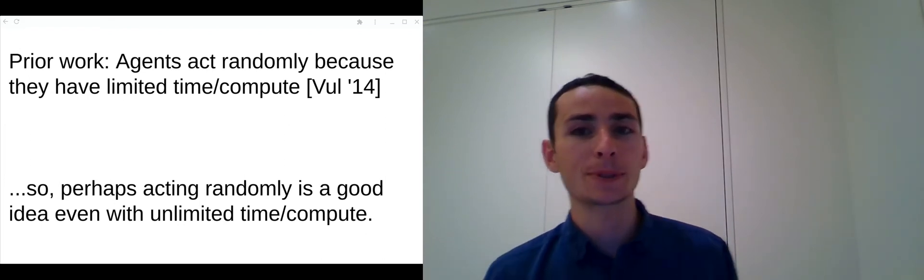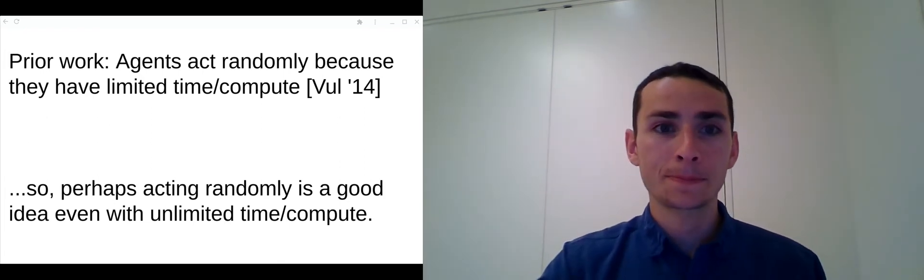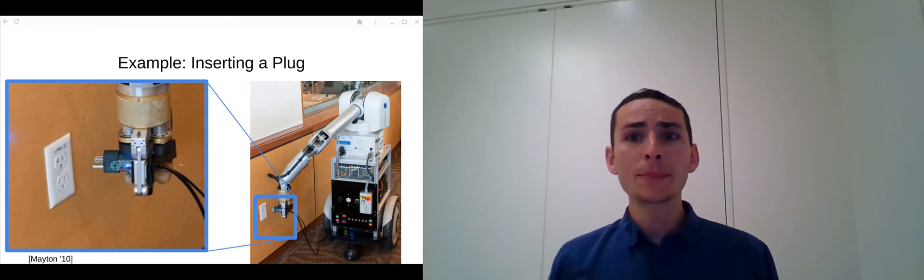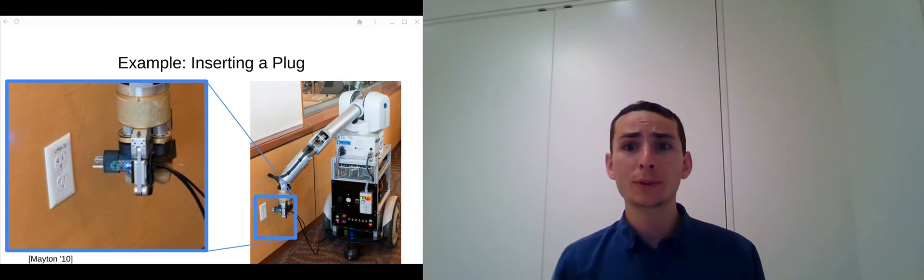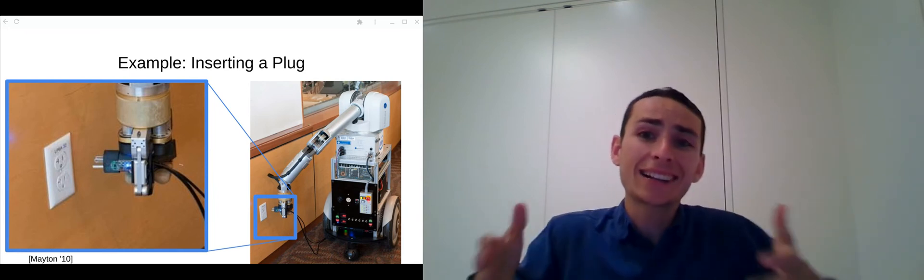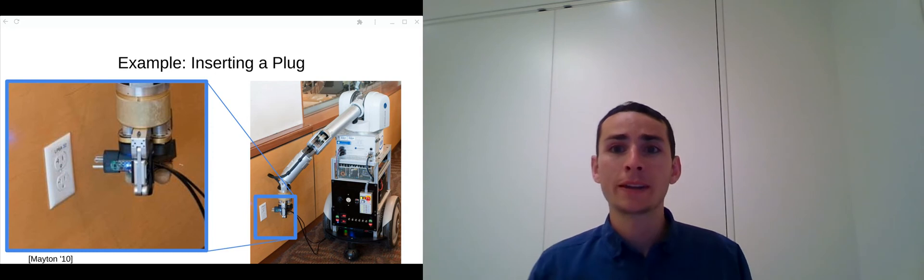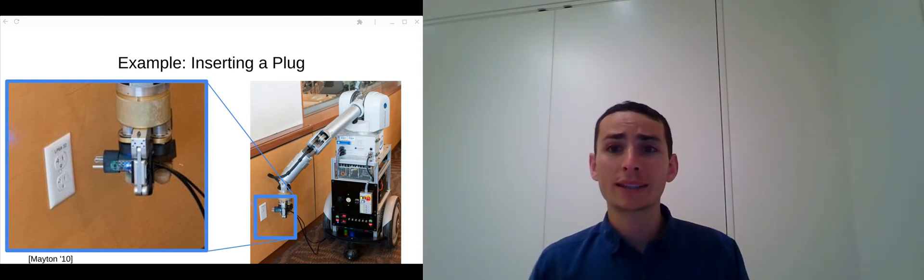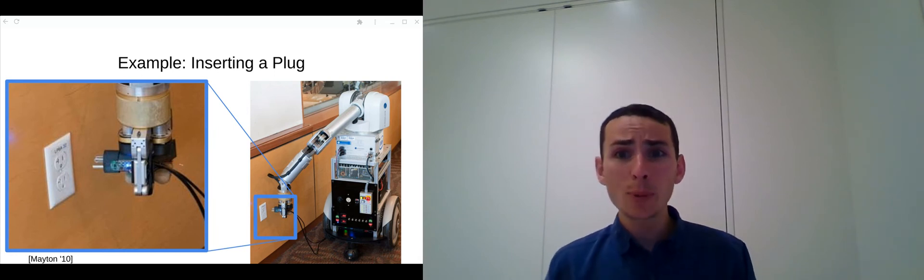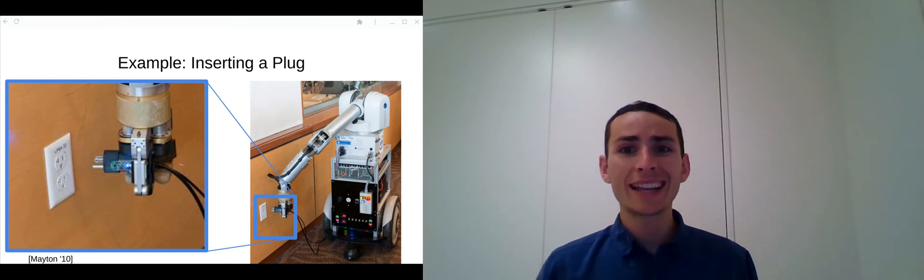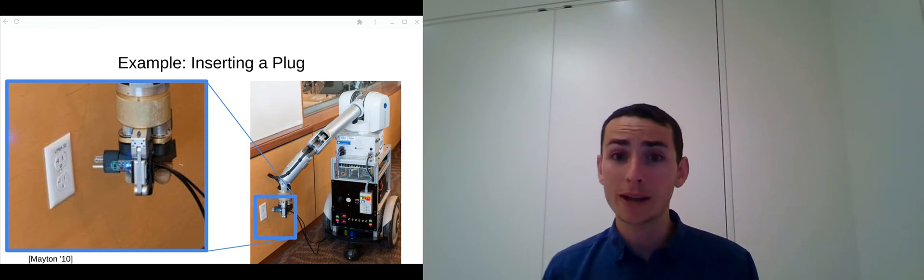Let's look at a couple examples to understand this. In this first example, there's a robot attempting to insert a three-pronged plug into a wall. As there's noise in the robot's sensors and the robot isn't placed in exactly the same position for each trial, jittering the plug around might help insert it. Said another way, if the robot always tries to insert the plug in exactly the same way, then any errors in measurements may mean the robot repeatedly fails.